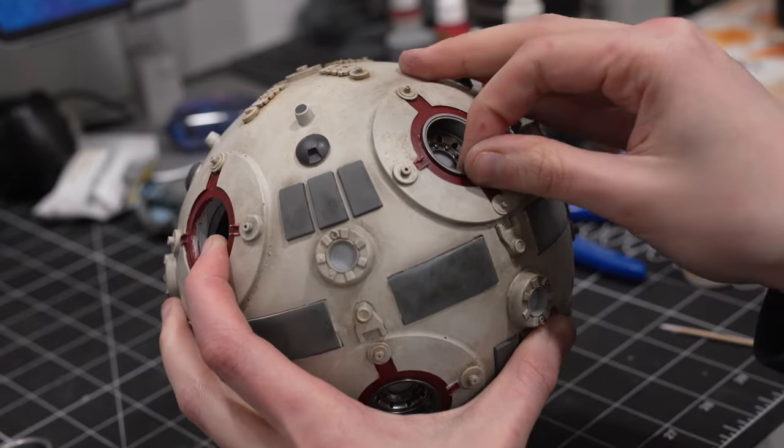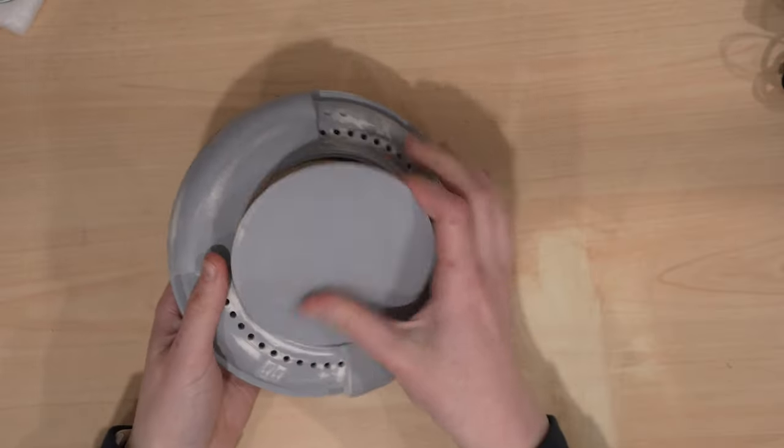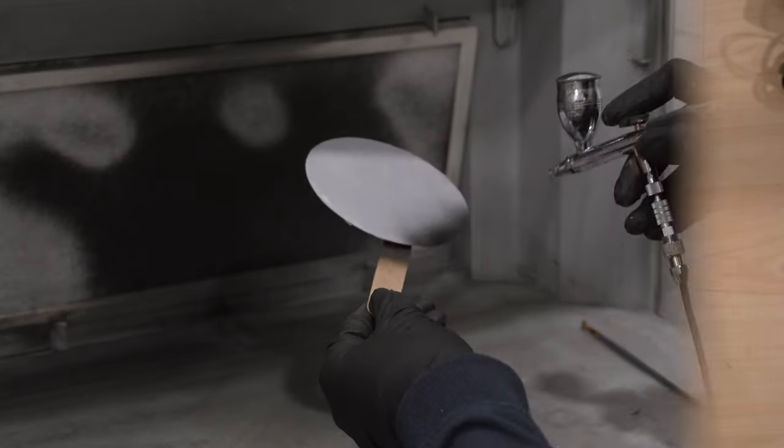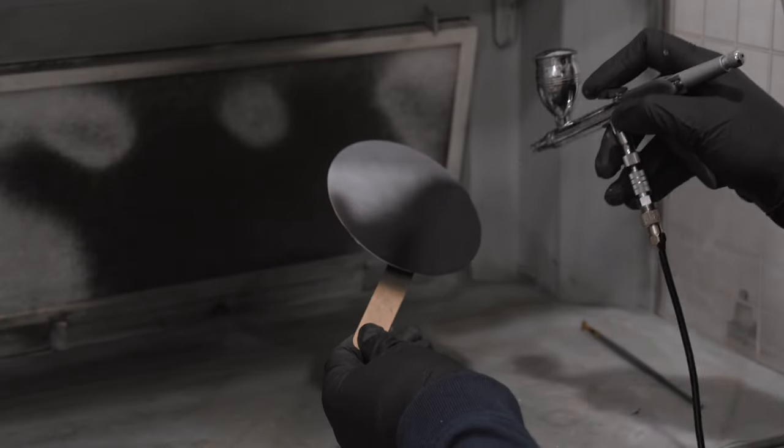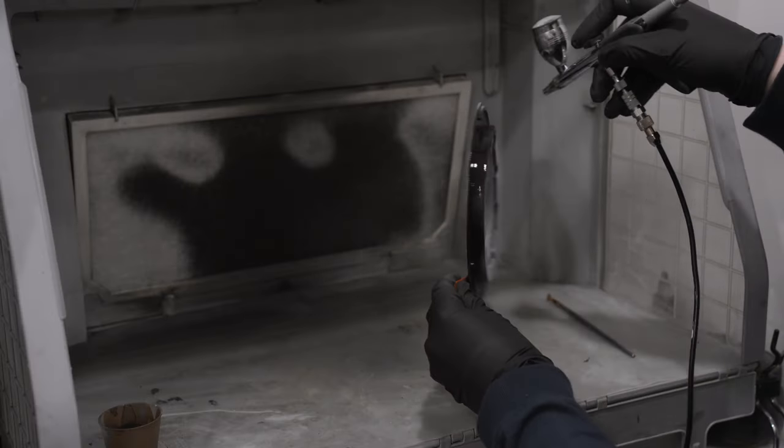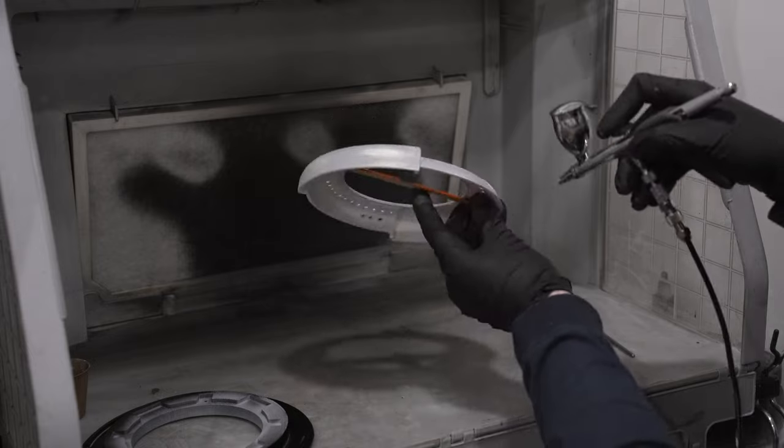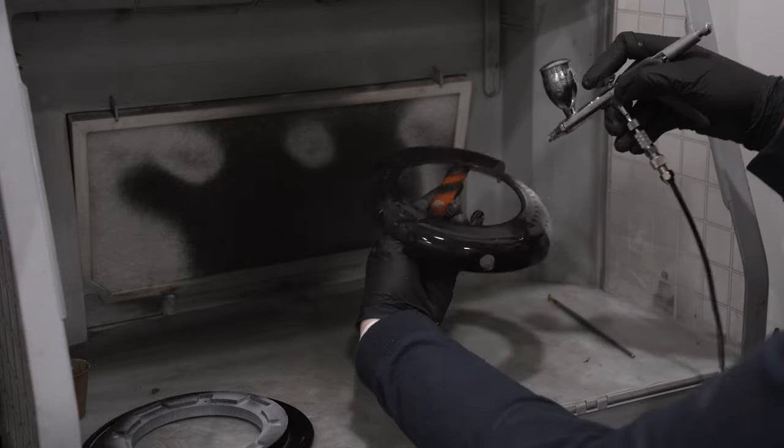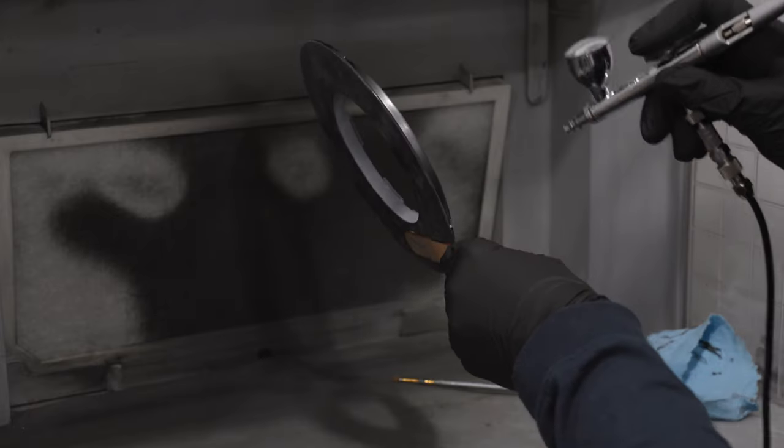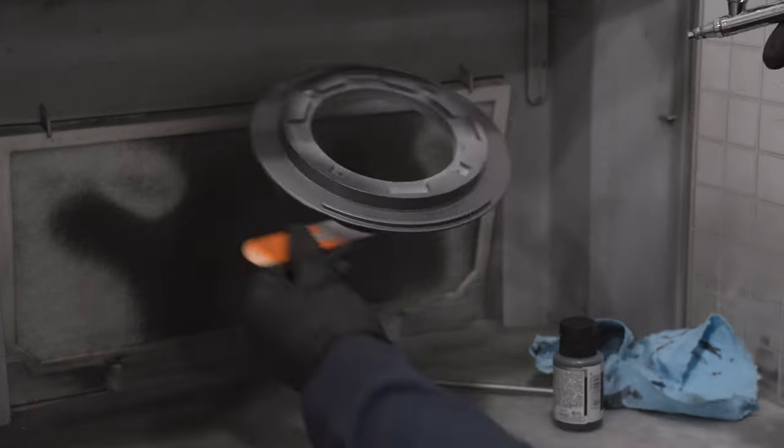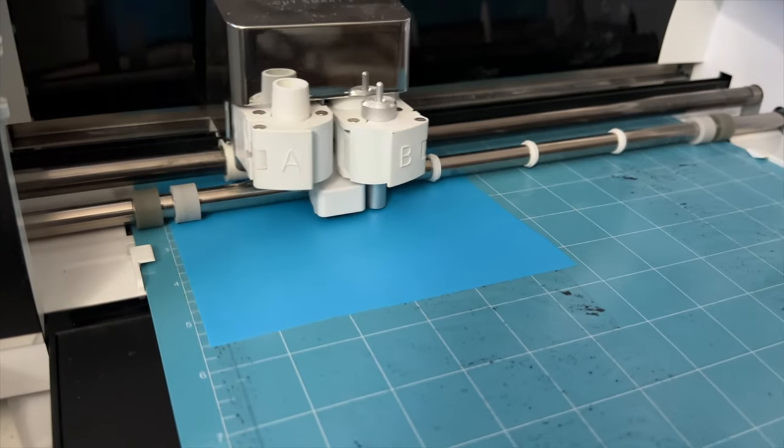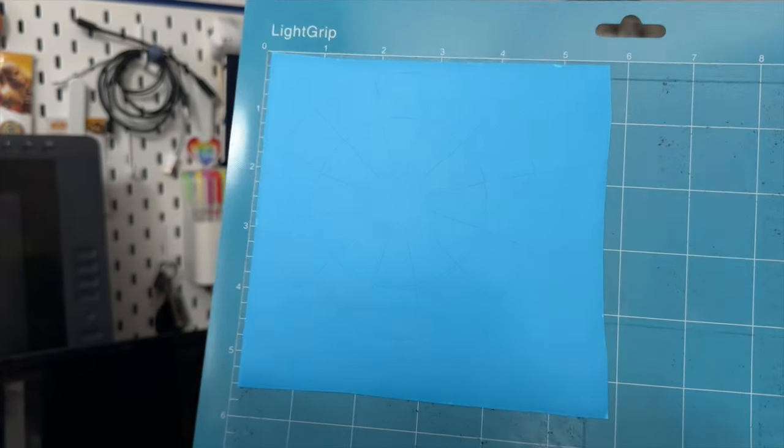Now the ball itself is finished, but this thing isn't going to be able to float without a proper base. The one designed to fit the magnetic levitation mechanism looks like the Holochess table, which is super cool. So I started off by priming all of the pieces for it in a gloss black, because this is a very gunmetal colored table. You're going to want to start out with a nice glossy base so that the metallic paint really pops.